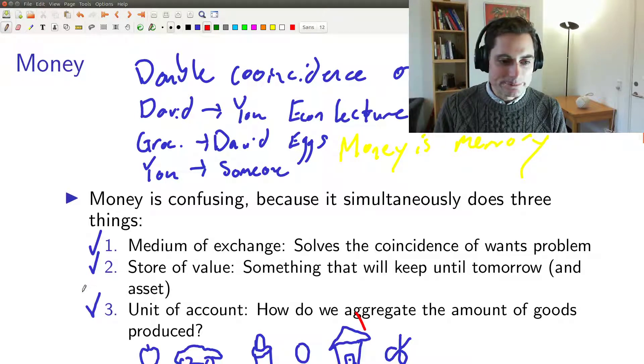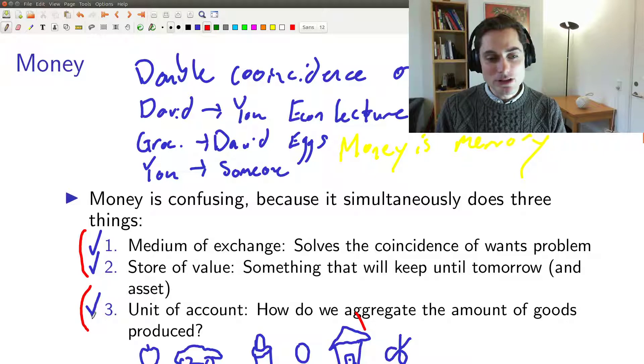Mostly I would say for the first half of this course until we get to monetary policy, really these two functions of money are not going to be important for us. The one that's going to be important is just this one - sometimes we're going to measure the value of goods and money, but that's it.